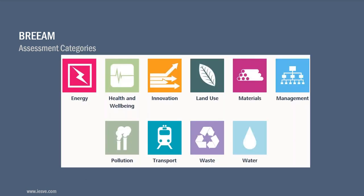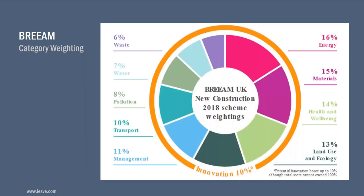The assessment is broken down into a number of categories: energy, health and well-being, innovation, land use, materials — materials is a key one — management, pollution, transport, waste, and water. Each category is split further into credits, each with a value or number of potential credits you can achieve. The more credits you achieve, the better the overall assessment score. Each credit is weighted — in BREEAM UK 2018, energy and materials are closely weighted at 16 and 15 percent respectively, with health and well-being at 14 percent.